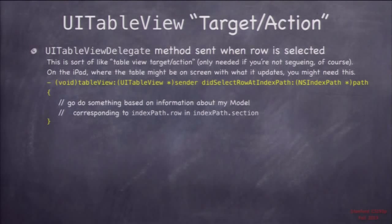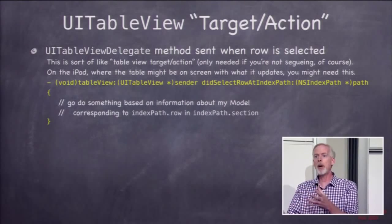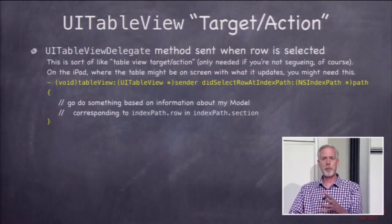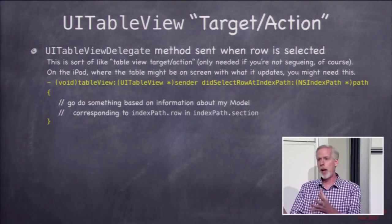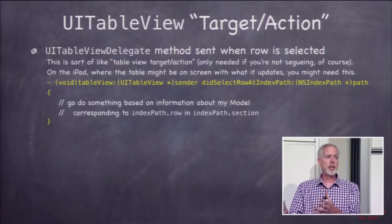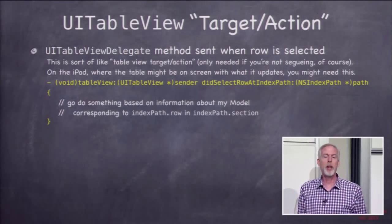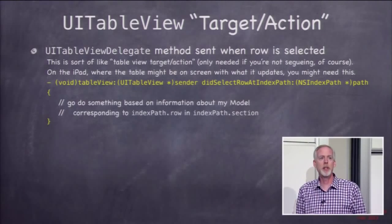What would you ever do in here? Well, if you're segueing, you wouldn't do anything in here. But if you're on the iPad, when you touch on a table, maybe the thing you're updating is already on screen — you're not going to segue to it because the iPad is big enough to show both. We'll see that in the demo today: we're going to click on a table row and it shows an image, and the image viewing thing is already on screen, so we just need to update it in this method.